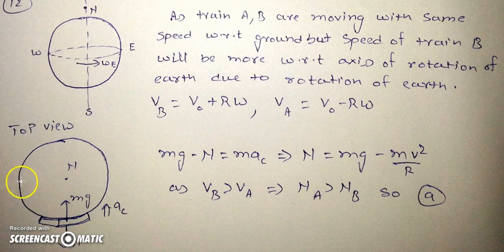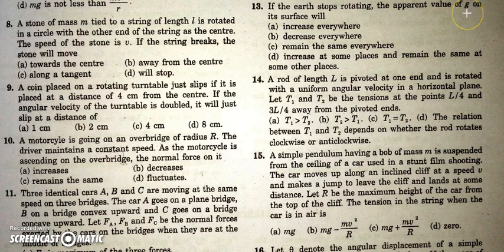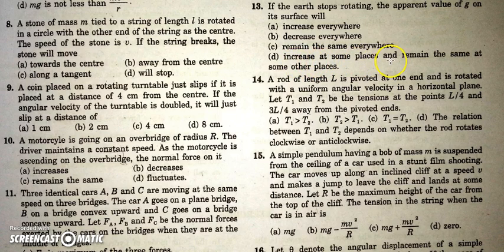If the earth stopped rotating, since rotation has no effect on the poles, g at the poles would remain the same. But at other latitudes, rotation contributes to apparent g, so apparent g would change — it would increase at most points. Therefore the answer is that g will increase at some points and remain the same at others.